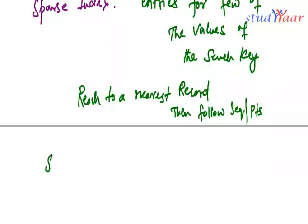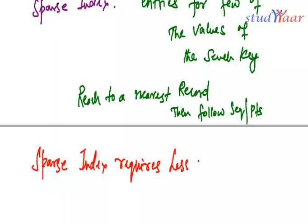Why at all do we have sparse indexes or rather indices? The reason is a sparse index requires less space than a dense index.